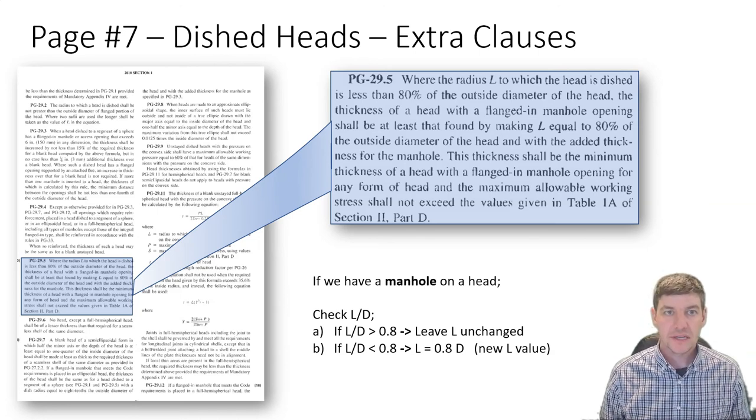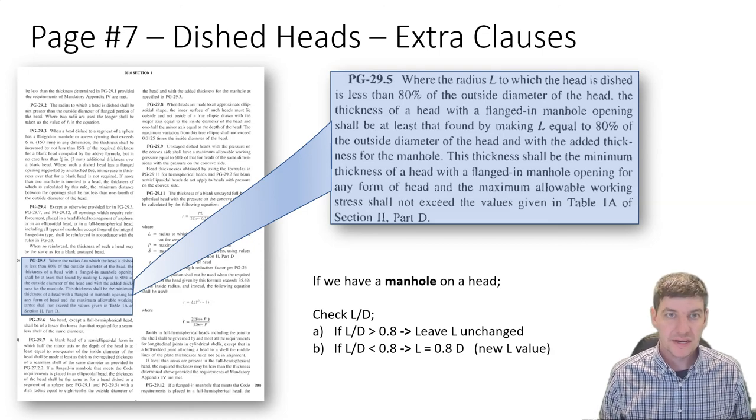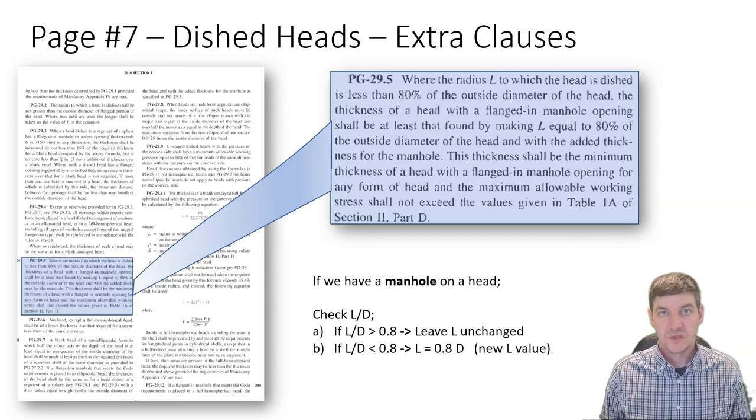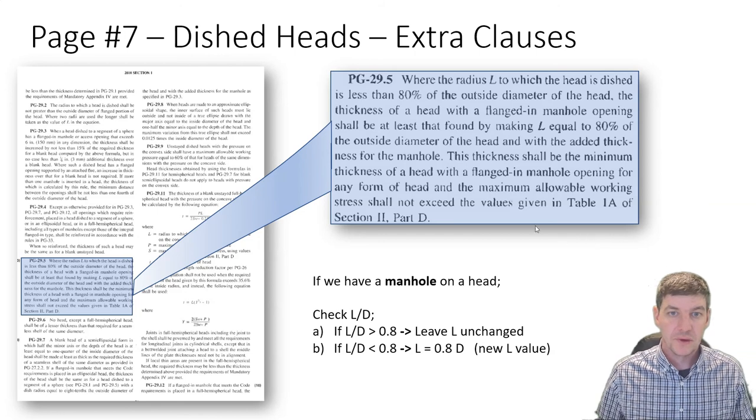We're going to artificially increase our L value, and the L value we're going to set it at is 0.8 times the diameter, so 0.8D. That's going to be our new L value when we do our calculations.